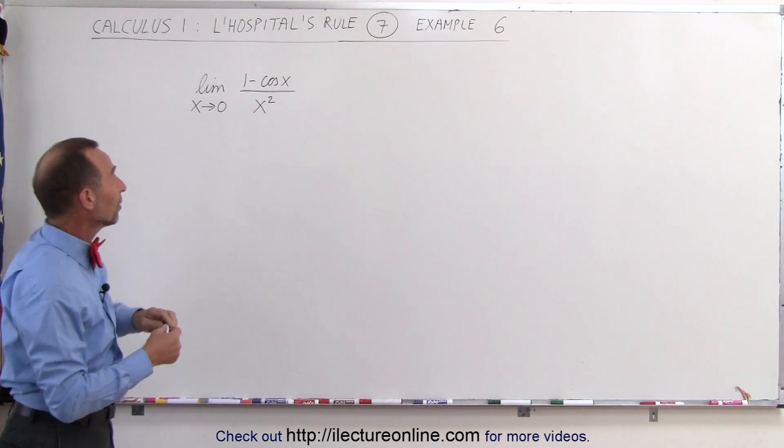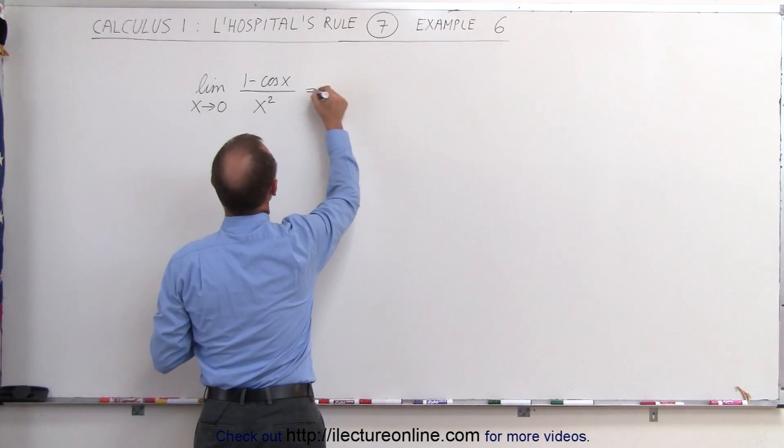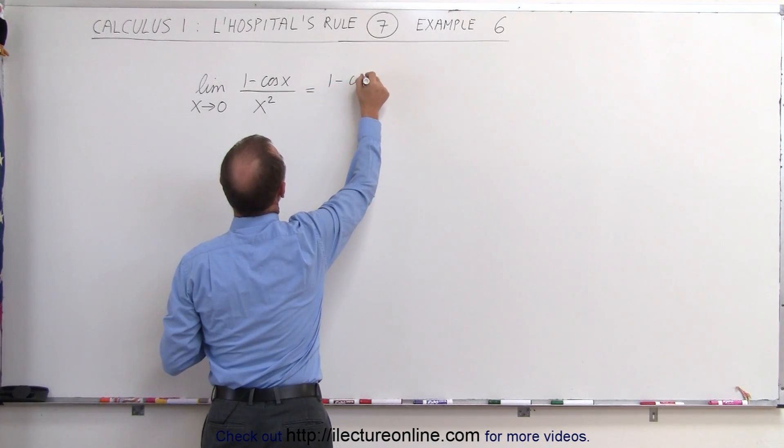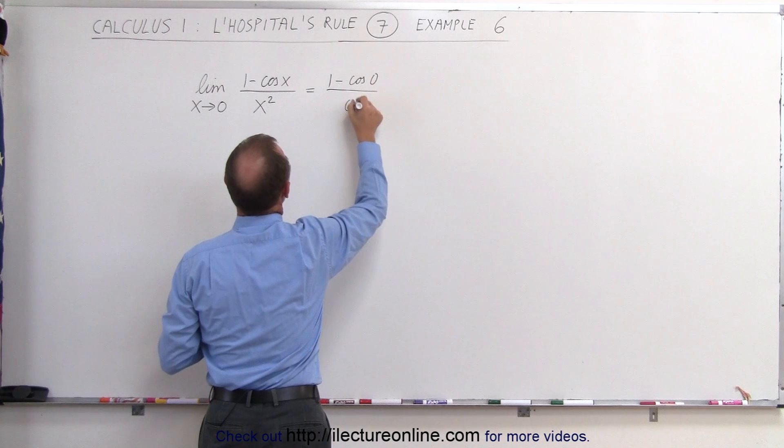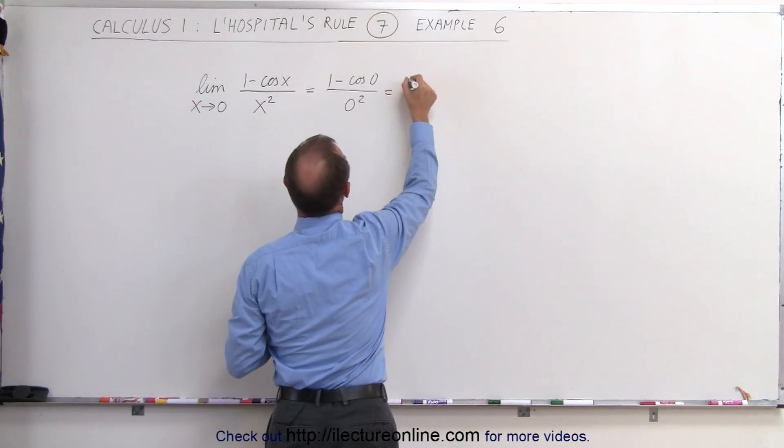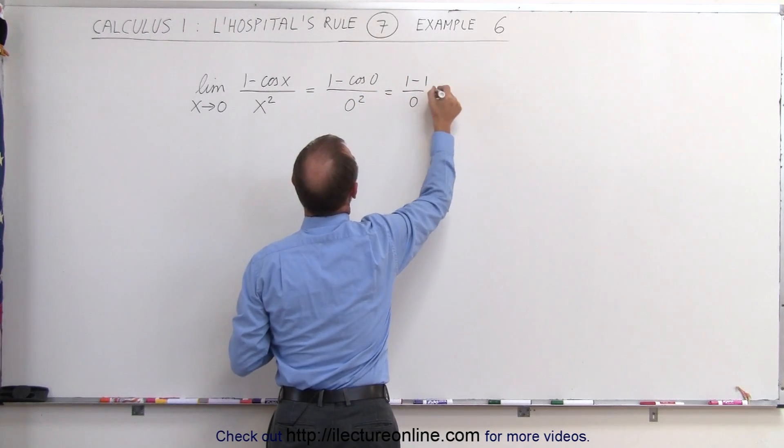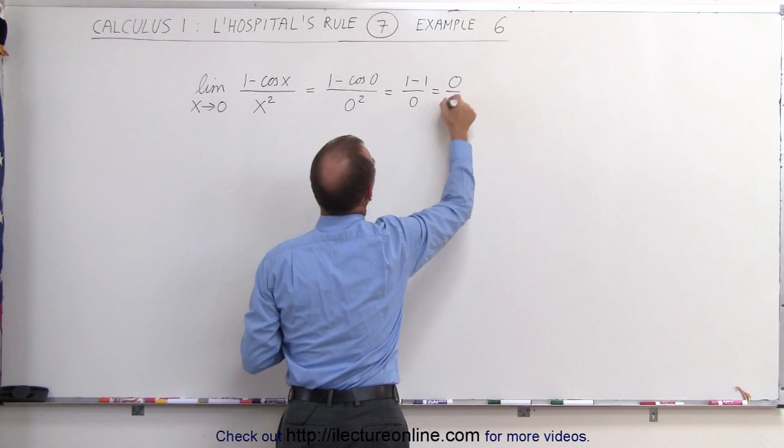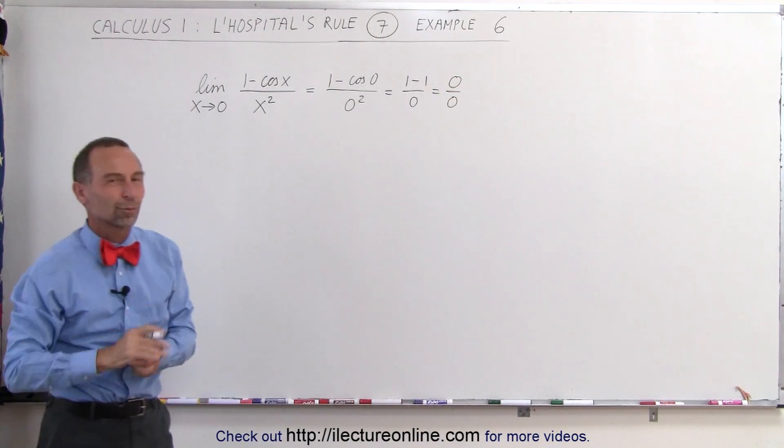If we do try to plug in the limit, let's see what happens. So this would be equal to 1 minus the cosine of 0 divided by 0 squared. It would be 1 minus 1 divided by 0 or 0 divided by 0. And again, that is an indeterminate form.